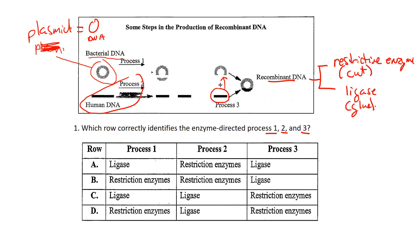Looking at process one: it's taking a piece of that plasmid, that circular bacterial DNA, and cutting a piece out. So process one is going to be a restriction enzyme. That eliminates A and C, leaving us with either D or B. Process two is the same thing — taking linear DNA and cutting it into pieces — so that's also a restriction enzyme.